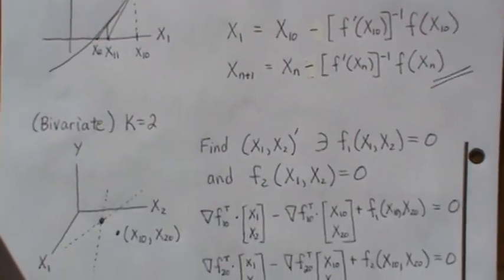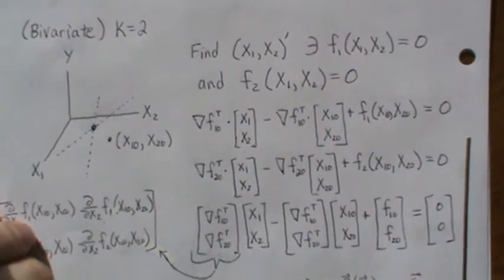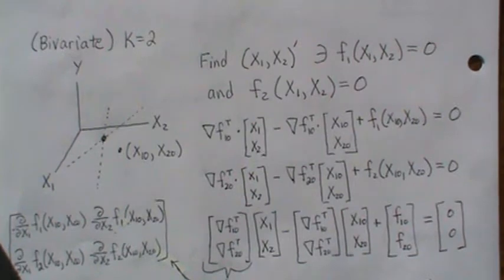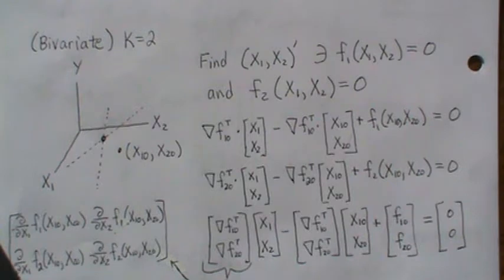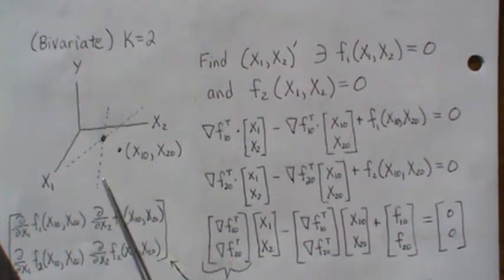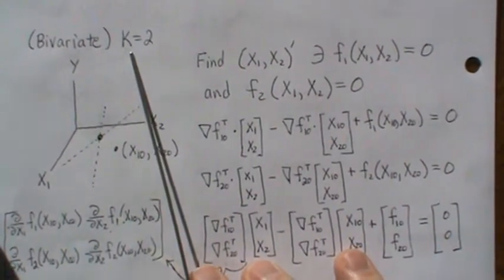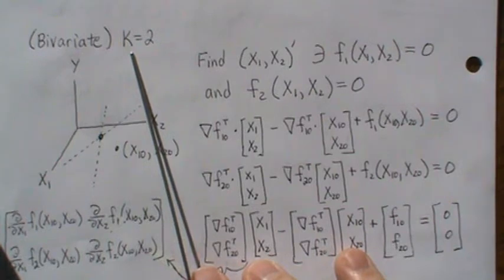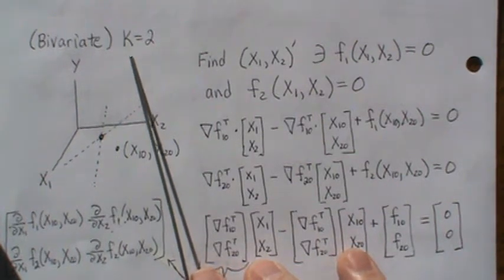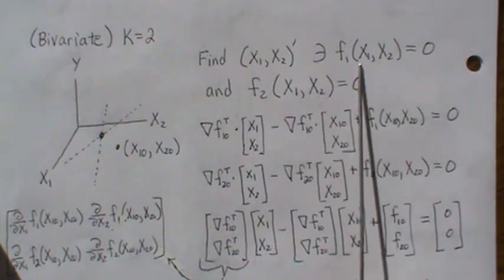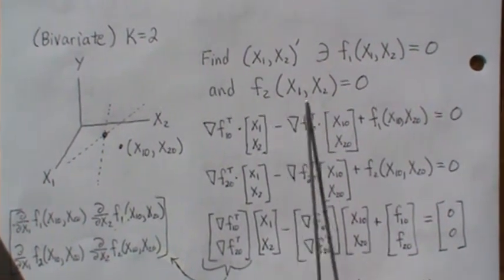So the key point is: geographically, this is what's going on. Now the videos I've seen for higher dimensions always make use of a Taylor expansion, and I don't want to do that. I want to keep it geometrically on what's going on. So for k equals 2 — two variables, two equations, nonlinear equations — we want to find the point such that f1 equals zero and f2 equals zero.